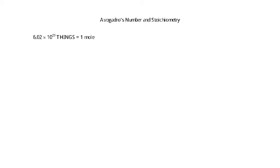We're going to discuss Avogadro's number and how it relates to stoichiometry, which is just another term for chemistry math. Avogadro's number is 6.02 times 10 to the 23rd.